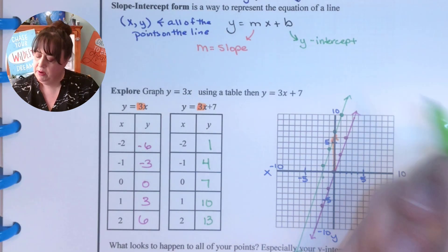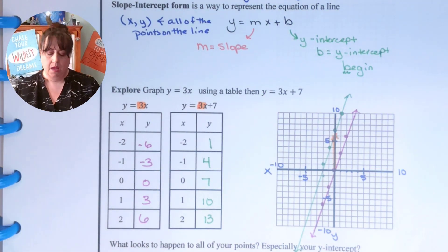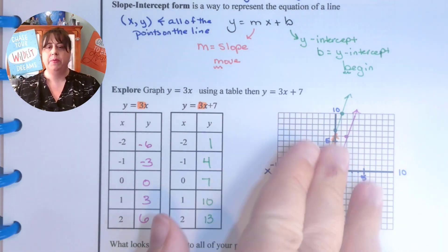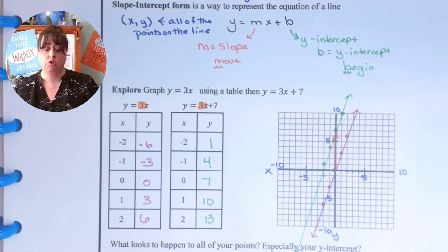I like to remember it this way. So b is the y-intercept, right? b also starts with begin. m is the slope. It's also move. So b is going to tell us where to begin and m is going to tell us how to move.